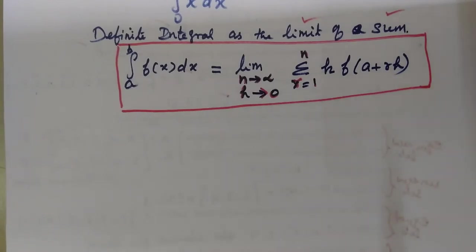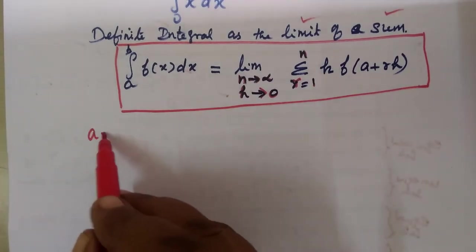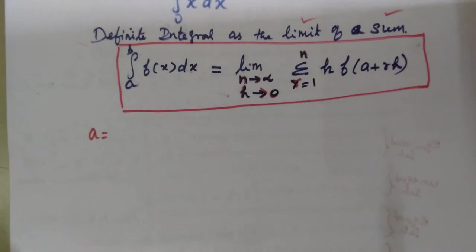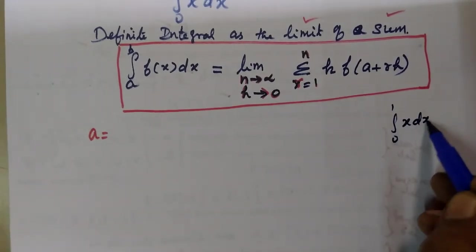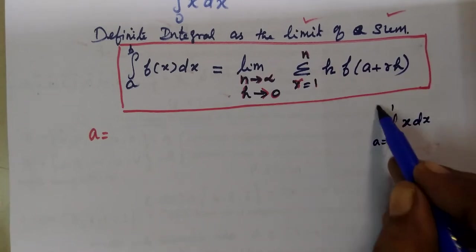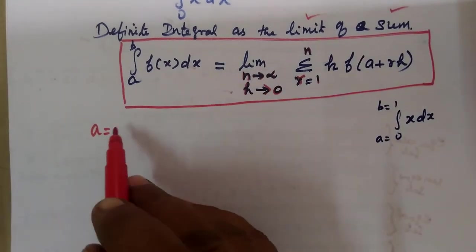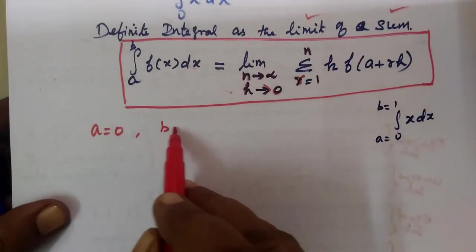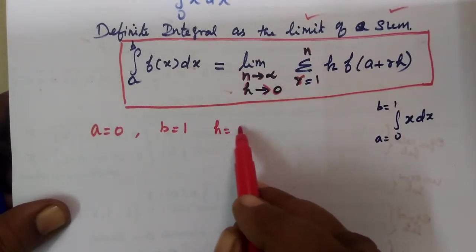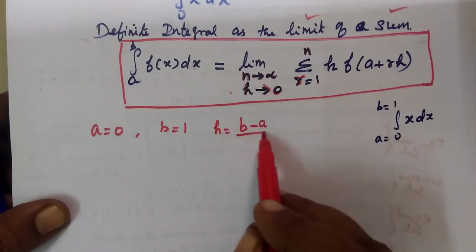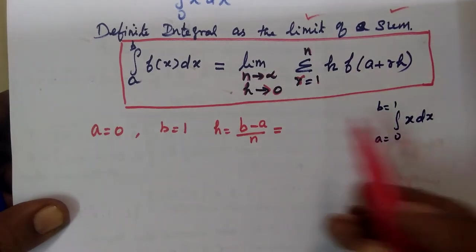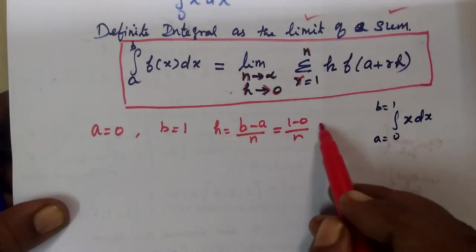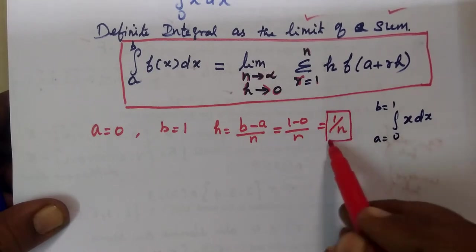In this formula, a equals 0 and b equals 1. So h equals (b minus a) divided by n, which gives h equal to (1 minus 0) divided by n, equal to 1 by n. So h value is 1 by n.